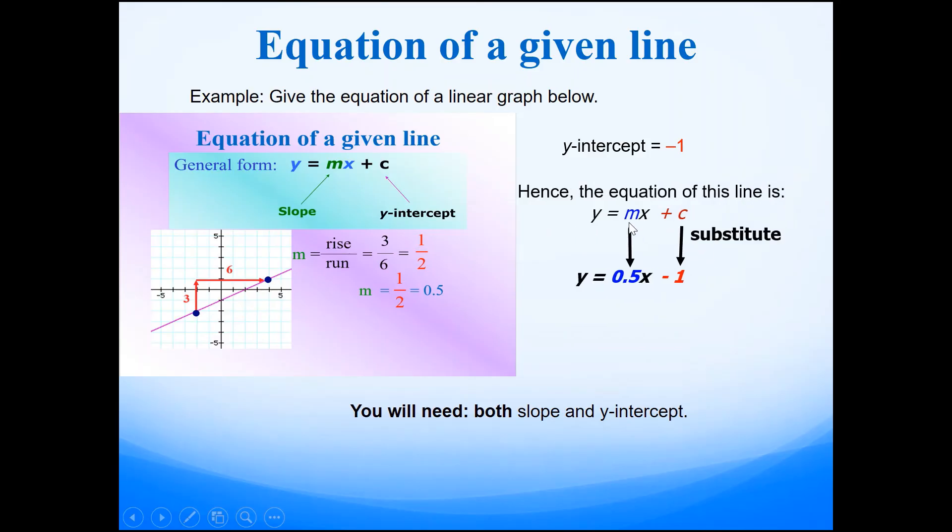We'll put these two pieces of information together. Hence the equation of this line is y equals 0.5x minus 1. 0.5 is the gradient value and minus 1 is the y-intercept value. Hope this makes sense.